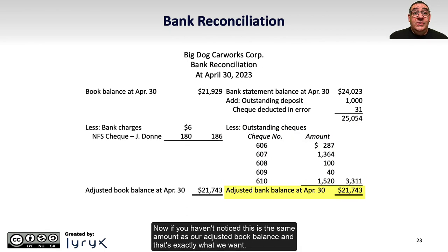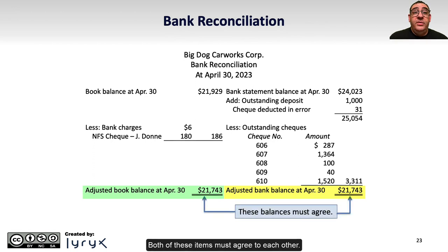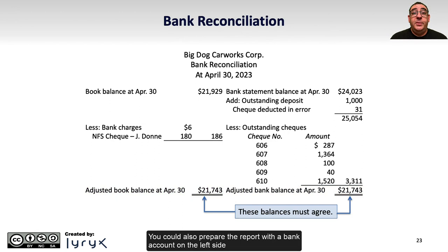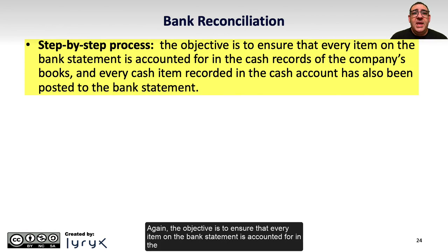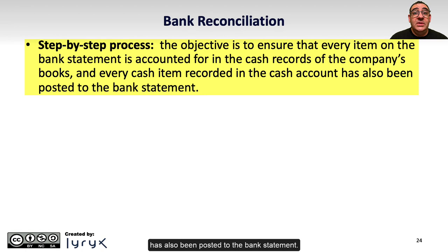If you haven't noticed, this is the same amount as our adjusted book balance, and that's exactly what we want — both of these must agree with each other. You could also prepare the report with the bank account on the left side and the book side on the right; it really doesn't matter. Now we'll go through this on a step-by-step basis. The objective is to ensure that every item on the bank statement is accounted for in the cash records of the company's books, and every cash item recorded in the cash account has also been posted to the bank statement.